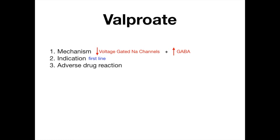Valproate is really a first-line medication. If you're taking your exam and they want you to pick what anti-epileptic drug to give somebody who has a general seizure — a partial or a tonic-clonic seizure — and they don't specify a specific subtype of seizure, then generically speaking, if you have to pick a first-line medication, valproate is usually your go-to.